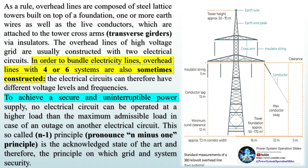As a rule, overhead lines are composed of steel lattice towers built on top of a foundation, one or more earth wires, as well as the live conductors, which are attached to the tower cross-arms and transfer skirts via insulators. The overhead lines of the high-voltage grid are usually constructed with two electrical circuits. In order to bundle electricity lines, overhead lines with four or six systems are also sometimes constructed. The electrical circuits can therefore have different voltage levels and frequencies.